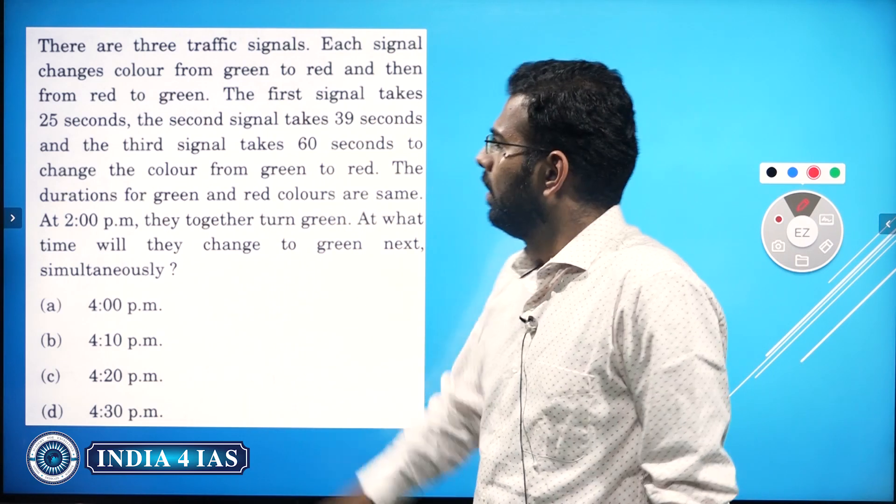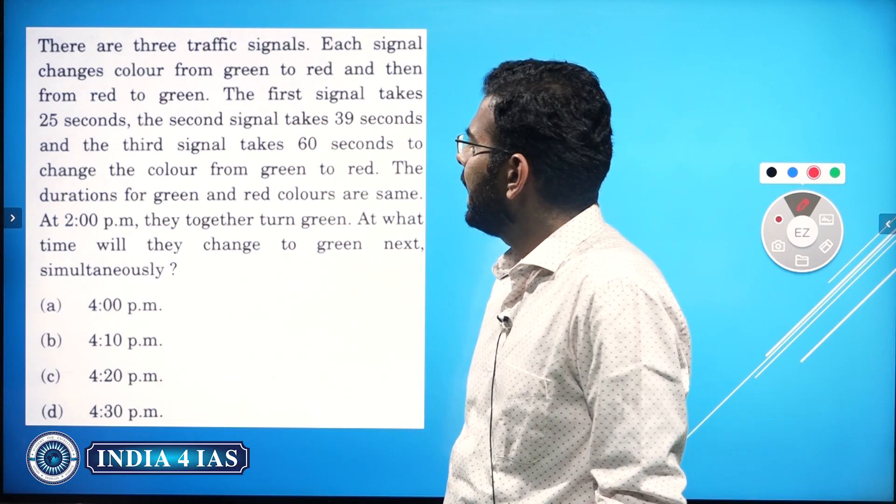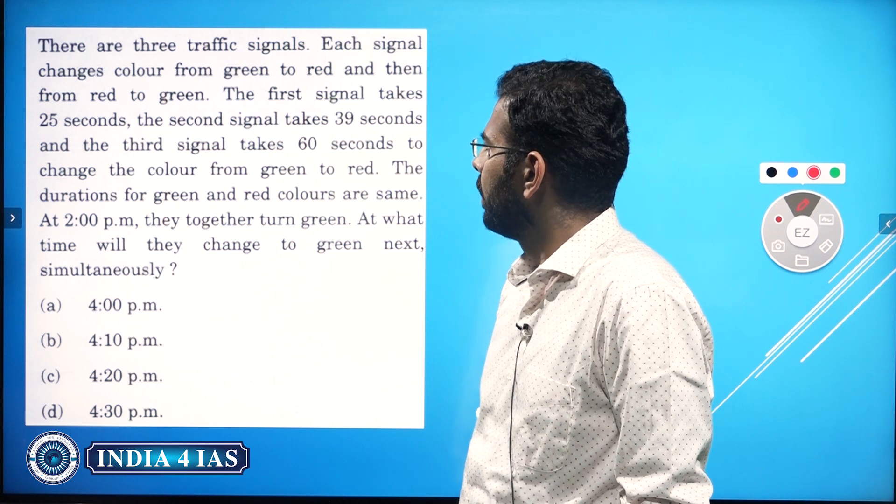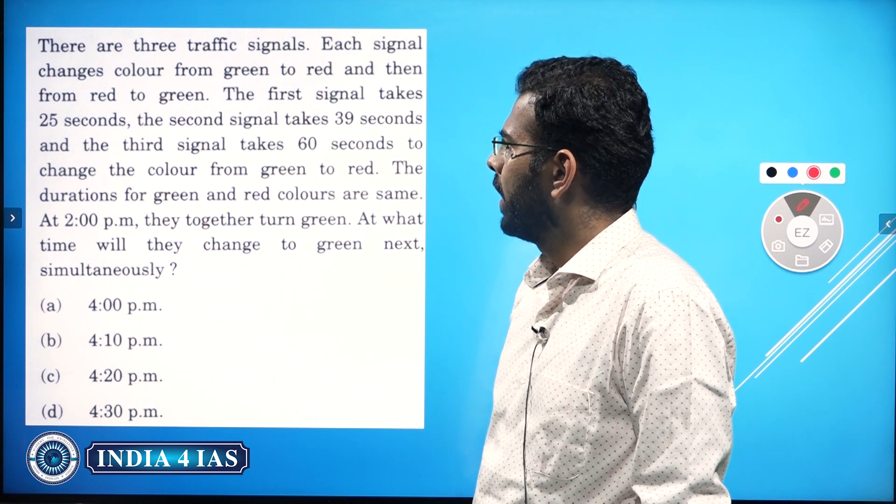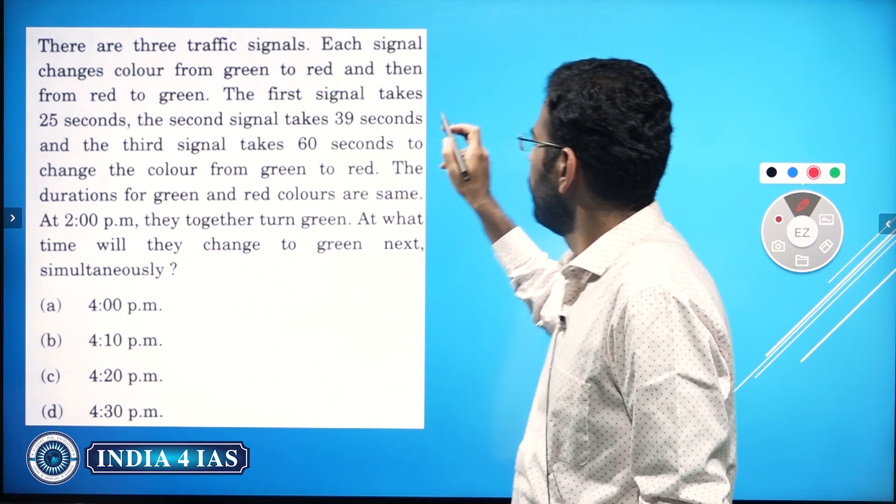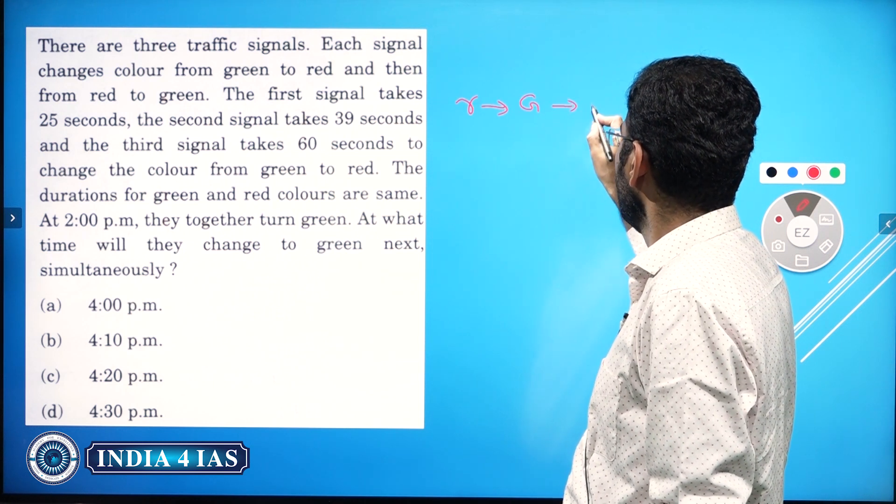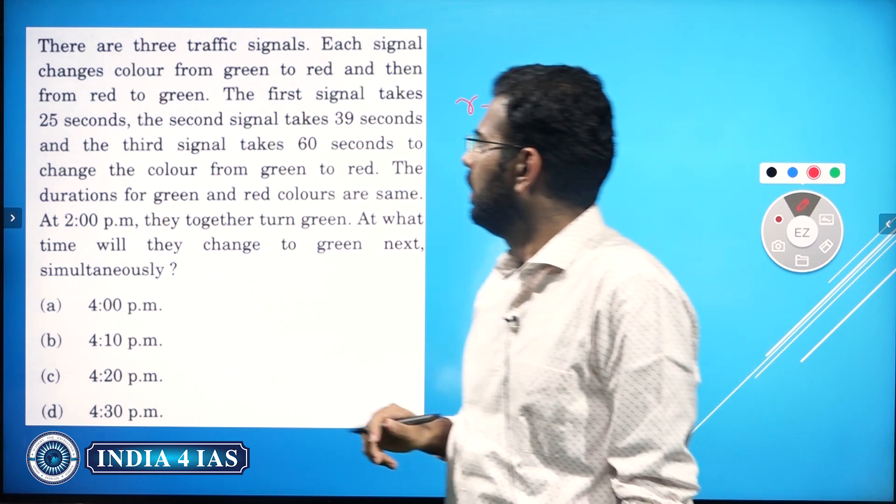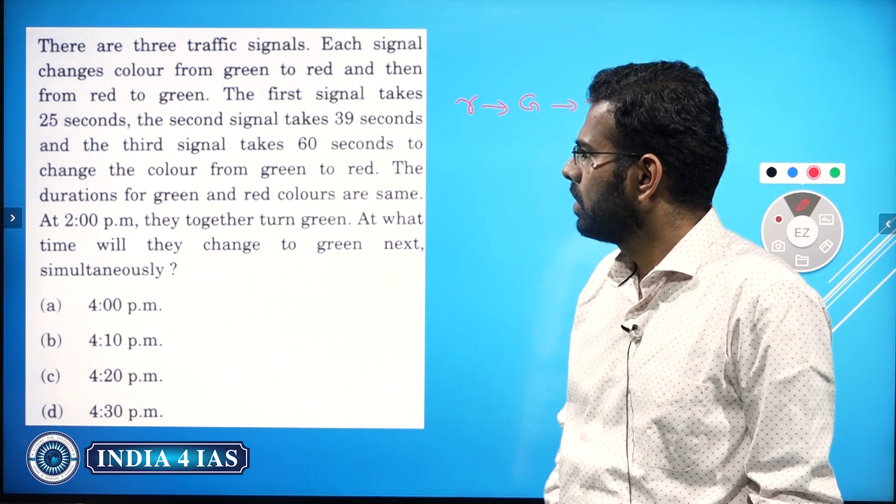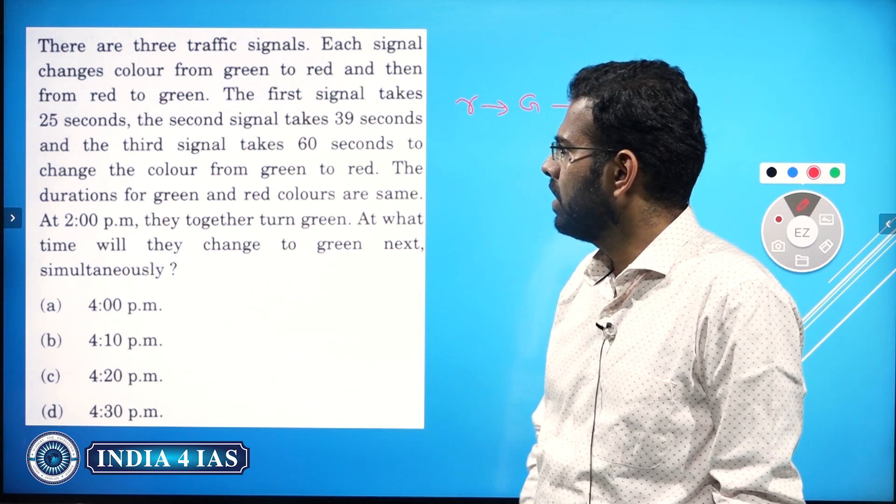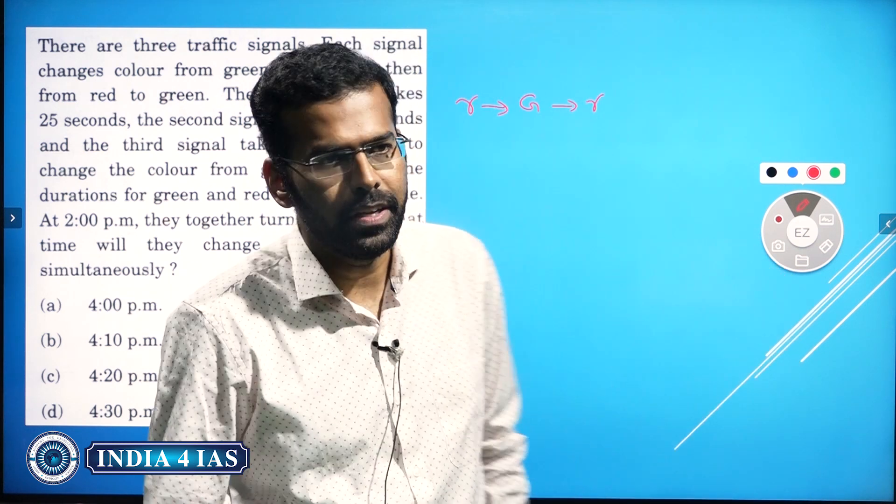There are three traffic signals. Each signal changes color from green to red and then from red to green. The first signal takes 25 seconds, the second signal takes 39 seconds, and the third signal takes 60 seconds.